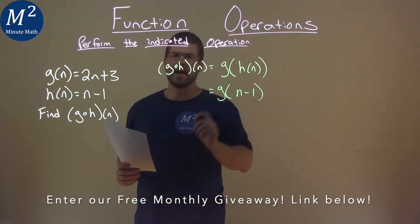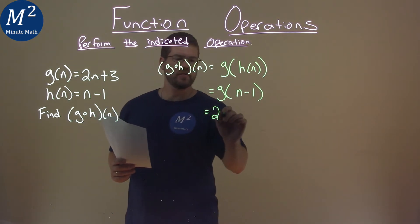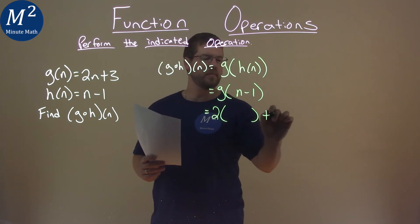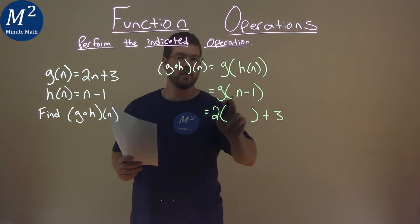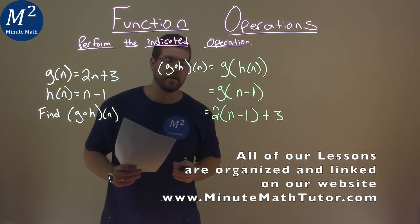And now we're going to take that n minus 1 and plug it into our function G. So G is 2 times n, I'll put parentheses here around it, then plus 3. We can see that right here. But instead of n, we're putting our h of n, which is n minus 1 here.